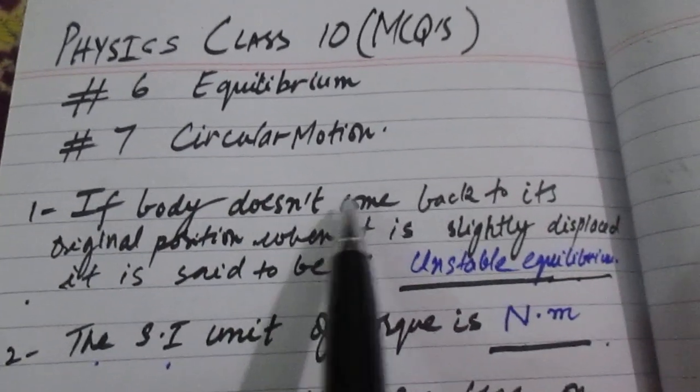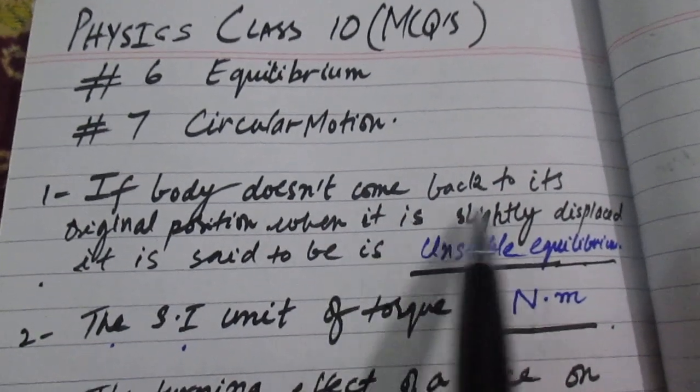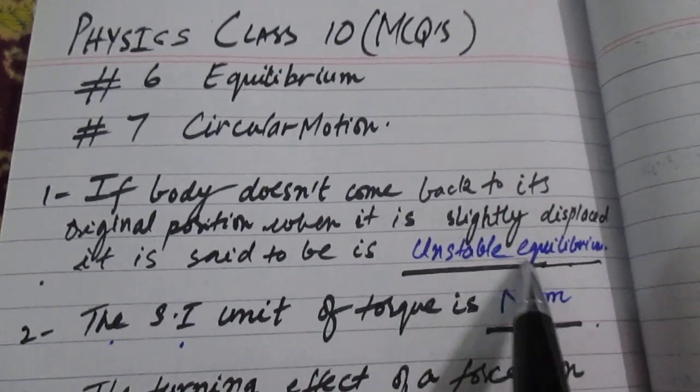If a body does not come back to its original position when it is slightly displaced, it is said to be in unstable equilibrium.